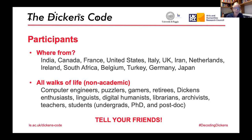We've got students, postdocs, lots of school teachers. This variety is extremely important to us and we hope it continues. Public support is absolutely key to the success of the project, because the only way we'll be able to understand Dickens's shorthand is if as many people as possible put their heads together to puzzle it out. You don't have to be an expert to get involved in the Dickens Code — you just have to like mysteries and puzzles like we do.